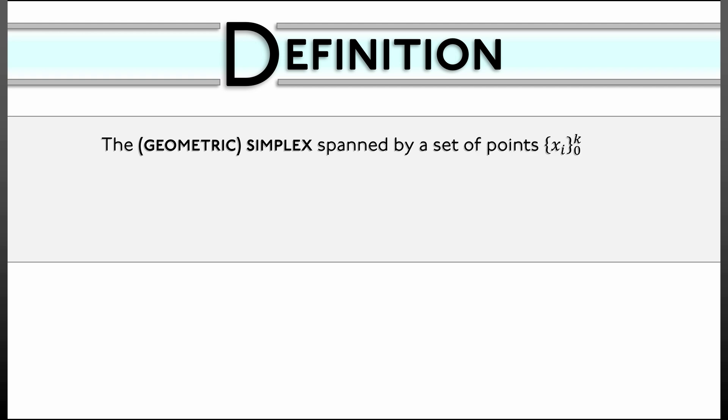Let's begin with the definition. The geometric simplex spanned by a set of points xi, as i goes from zero to k, sitting inside some Euclidean space Rⁿ, is the closed subset in that Euclidean space given by the following. We take the linear combination, sum as i goes from zero to k of tᵢ times xᵢ, where these tᵢ are coefficients. These coefficients have to be non-negative and they have to sum up to one.